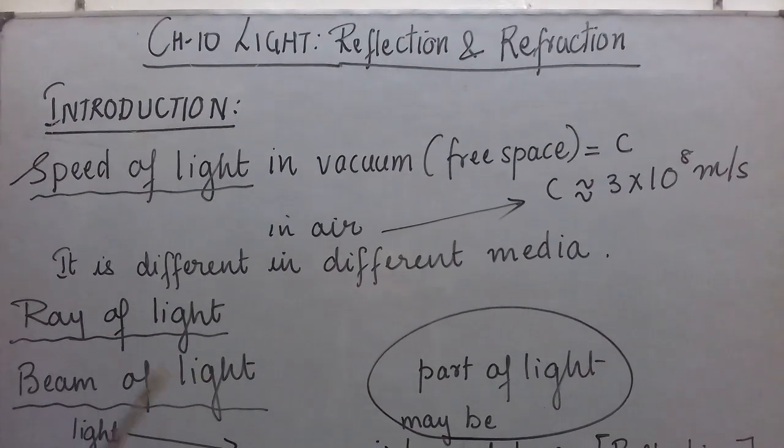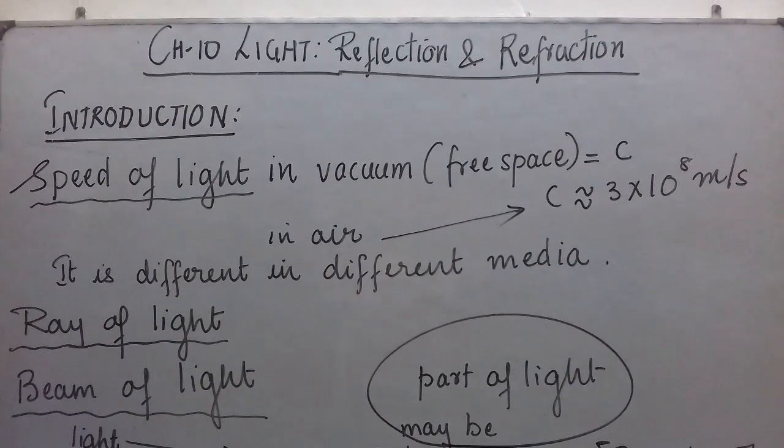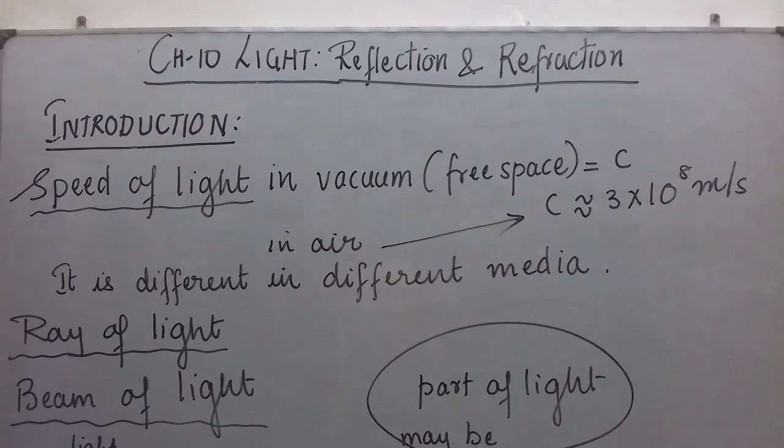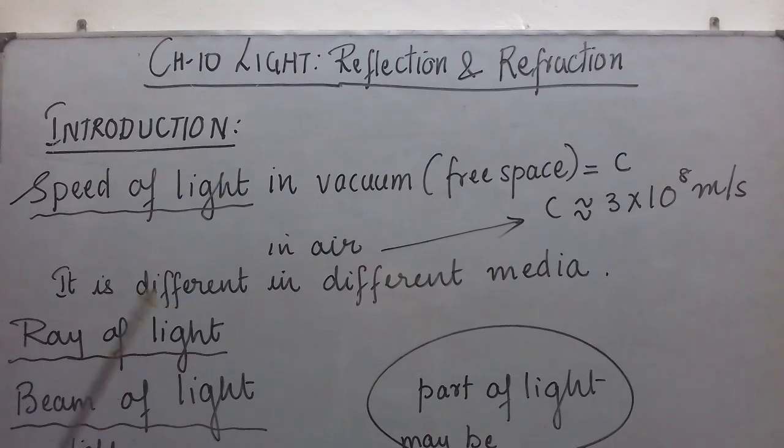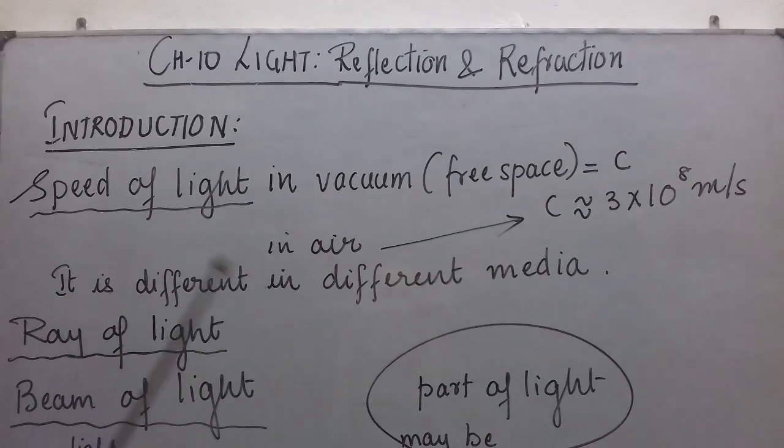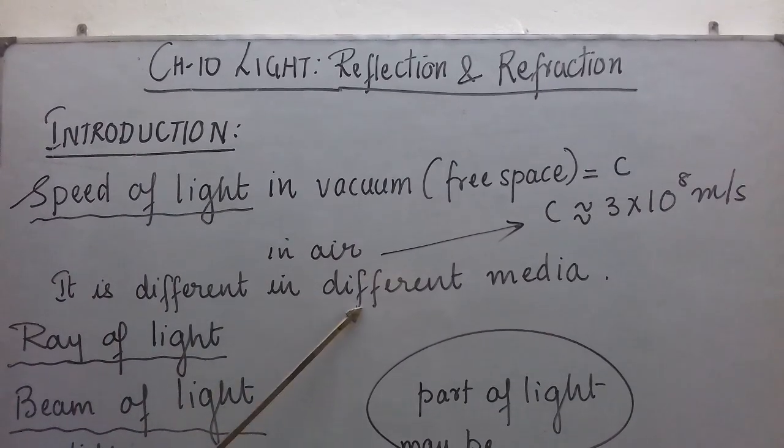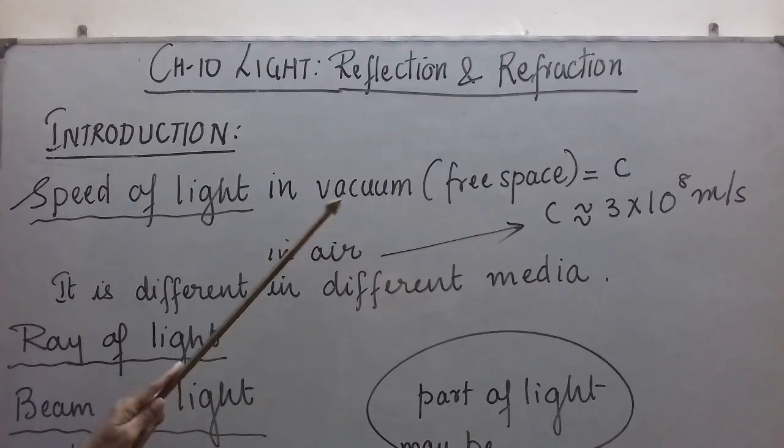Now, light travels in different media. Media means media can be atmosphere, media can be water, media can be glass. So, light travels with different speed in different media. We say speed of light is different in different media but it is maximum in vacuum.